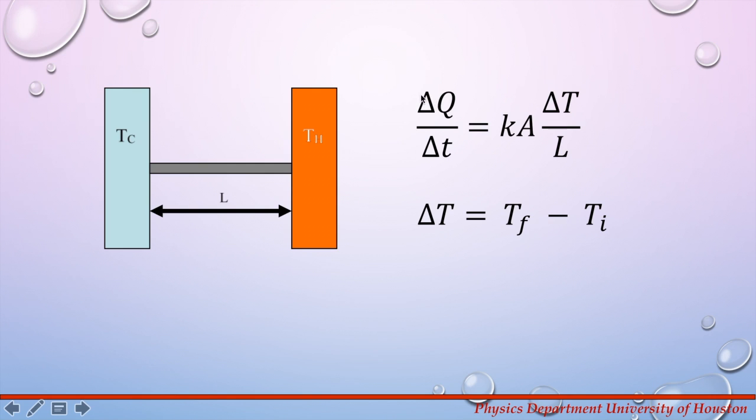The amount of heat that's transferred per unit time is given by this equation. Delta Q over delta T is Ka times delta T over L. Here delta T is a temperature difference between the ends of the bar.